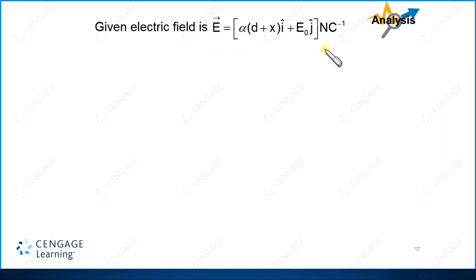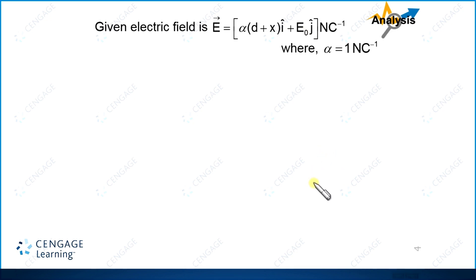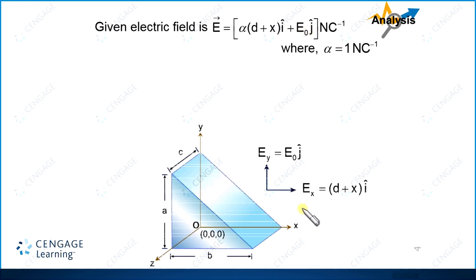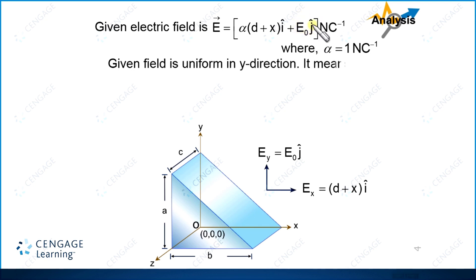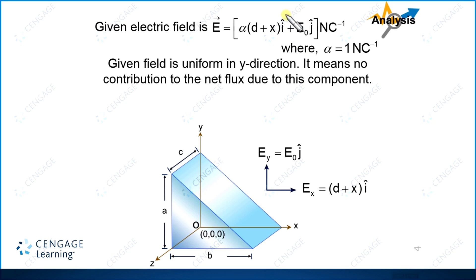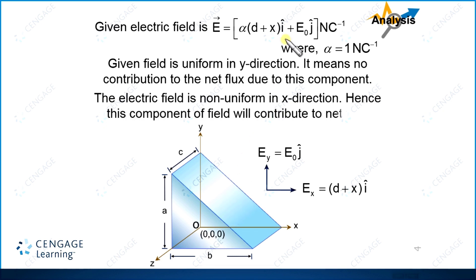Let us write the electric field vector with α equal to 1 newton per coulomb. As discussed, the Y-component of the electric field is uniform, meaning there is no contribution of net flux from this component to the closed surface, so we need not care about the Y-component. The electric field is non-uniform in the X-direction, which means the X-component will contribute to the net flux. We will calculate the flux due to the X-component only.